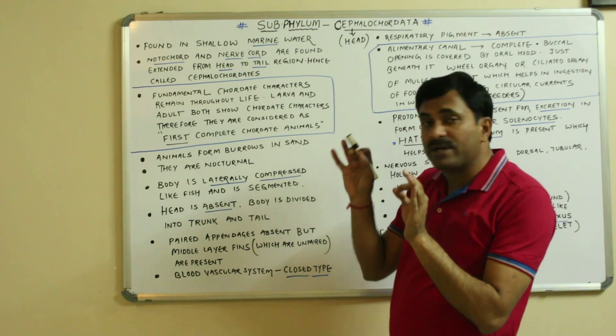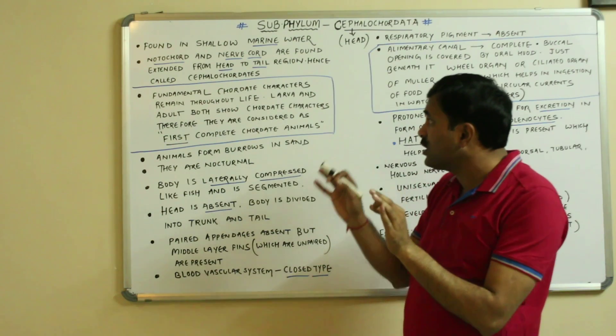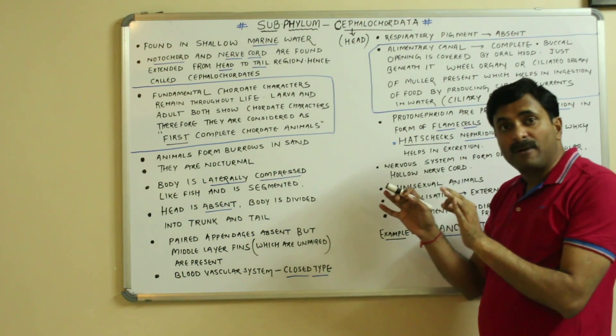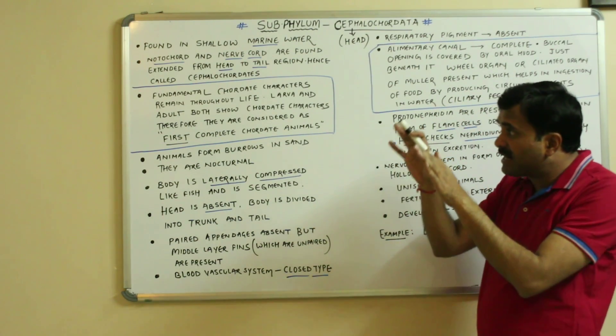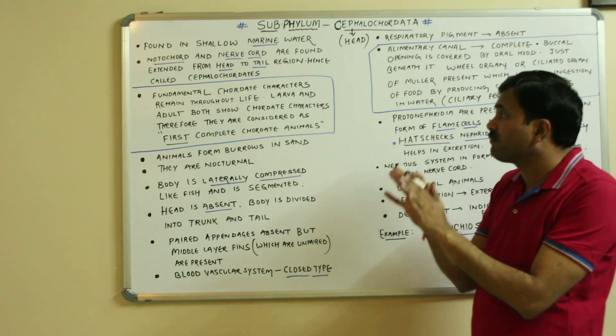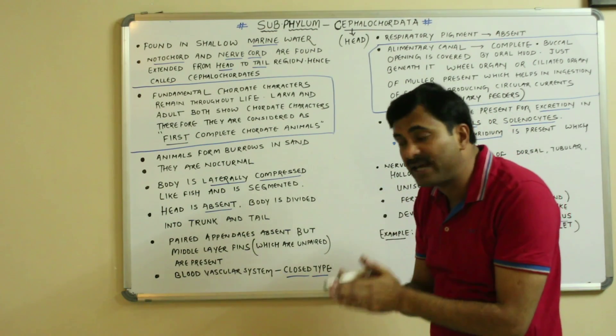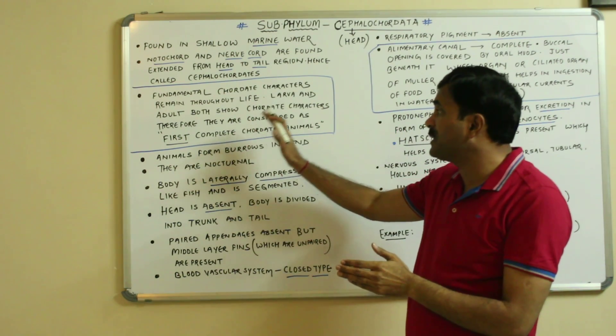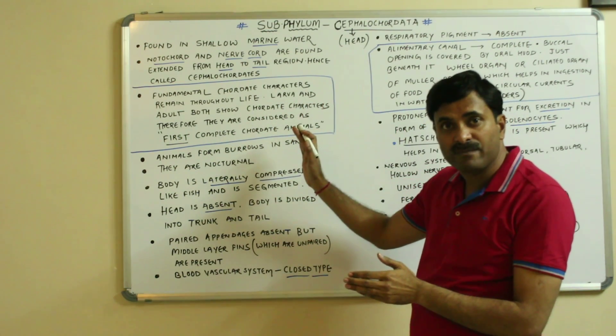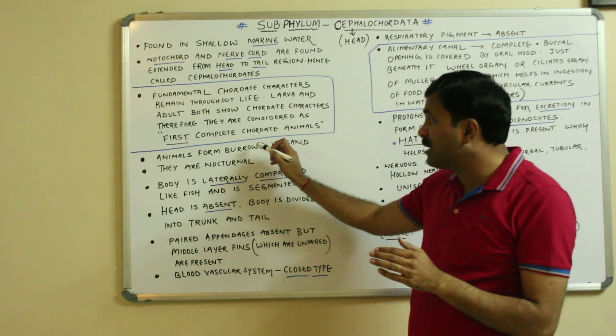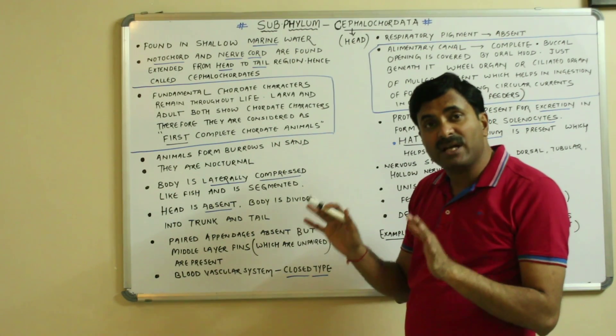The larva and adult both show cordate characters, therefore cephalocordates are considered the first complete cordate animals. They make burrows in sand and come out at night.